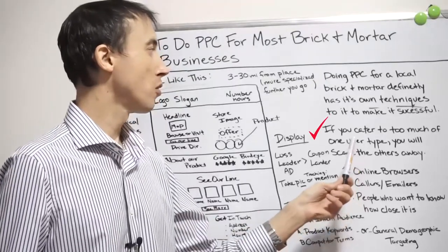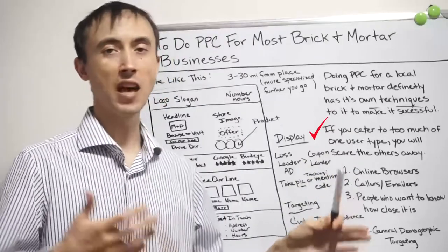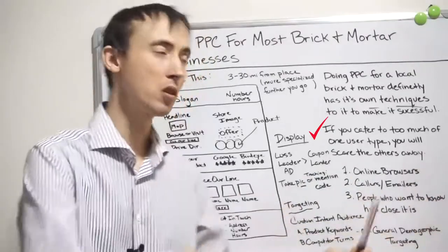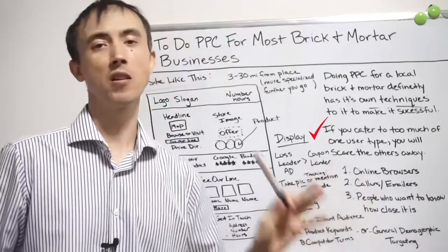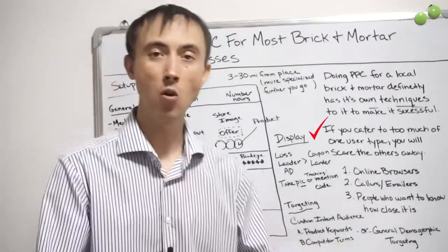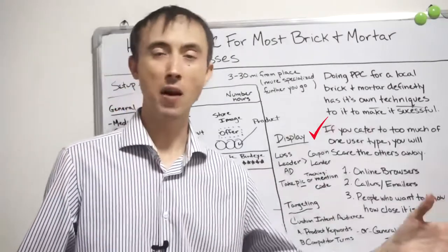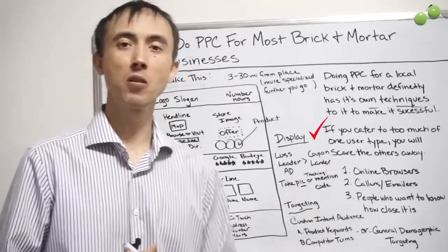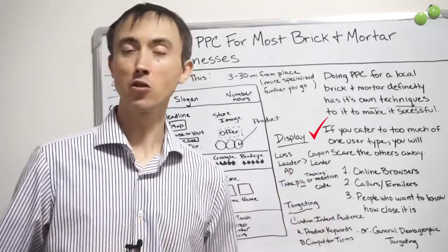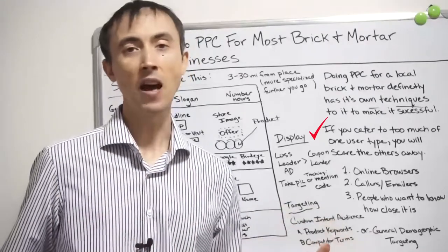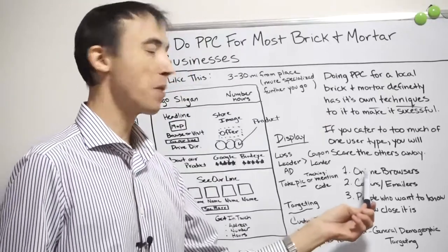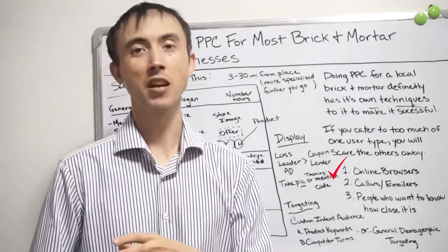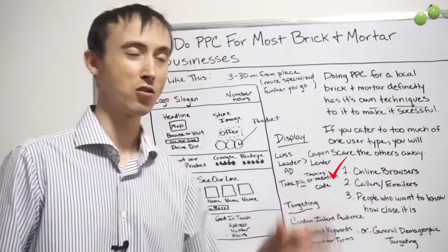Since we're catering to people who naturally want to deal with someone in person, there's a specific cadence to set things up. There are three different types of people who want to buy locally. The first type wants to browse your website online before they come in — you can't get by without having a website anymore because of these people.